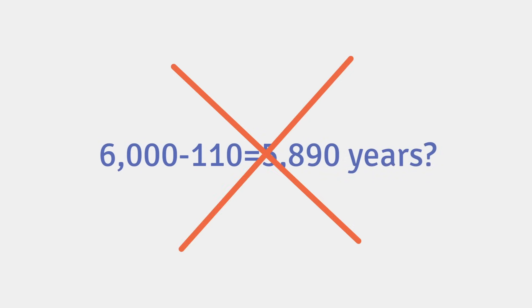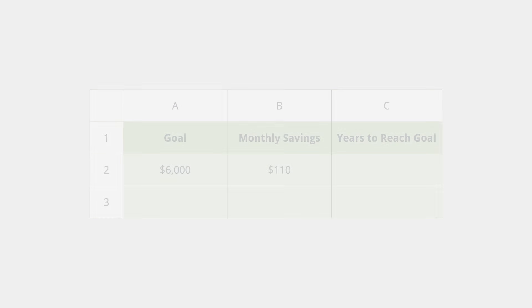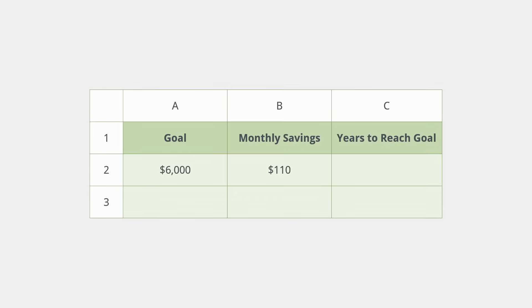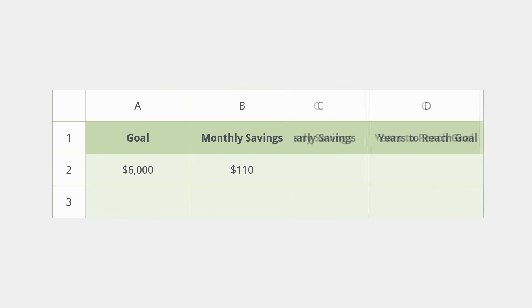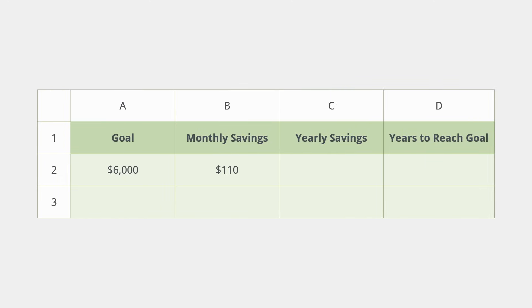Let's try breaking it down instead. We're talking about how many years this is going to take, so maybe we should figure out how much we can save in a year based on what we're setting aside each month. The formula might look something like this: monthly savings times the number of months in a year — a simple multiplication problem. And the answer is $1,320 per year.